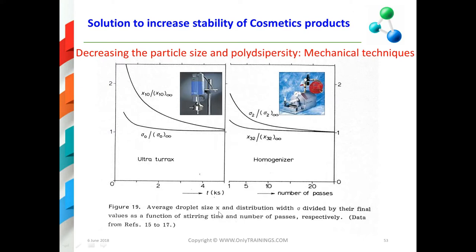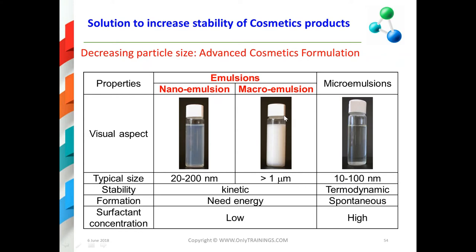Another way to increase the stability is to decrease the size of the dispersed phase droplets. For that you can use mechanical methods such as ultraturax or high pressure homogenizers. You can see that you will decrease the particle size with time of use of ultraturax or with the passes inside the high pressure homogenizer.